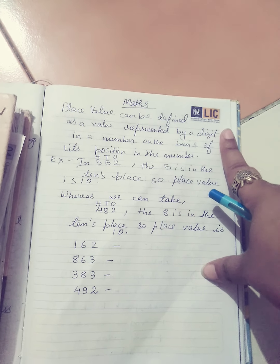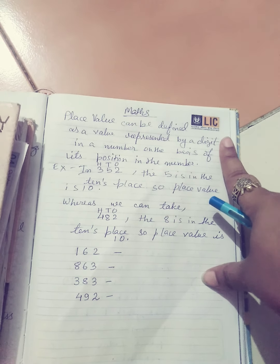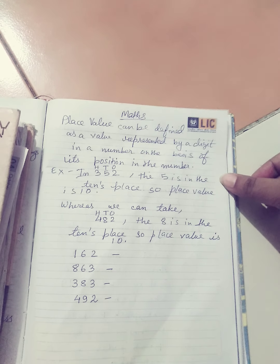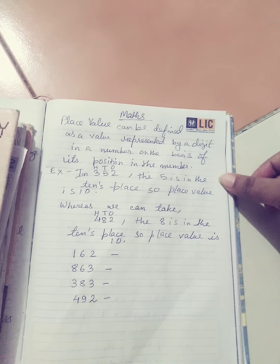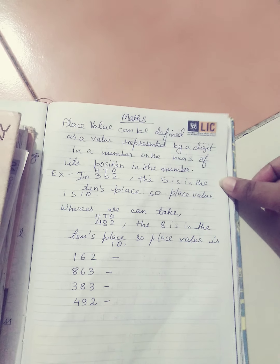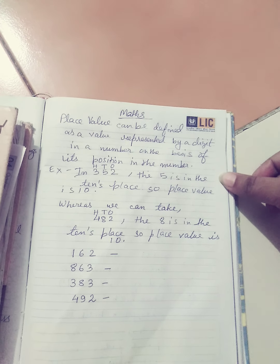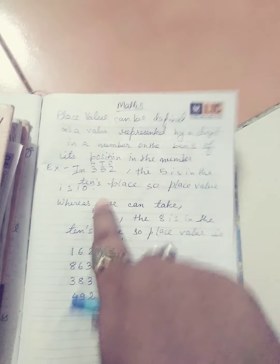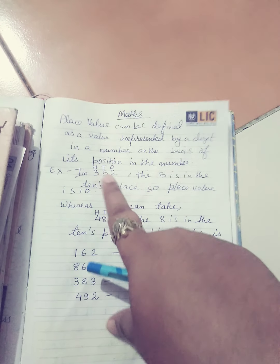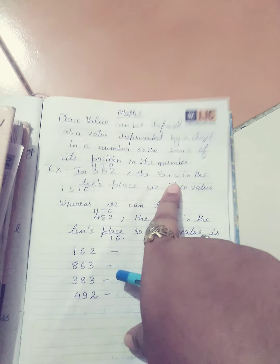First of all, we will know what is place value. Place value can be defined as a value represented by a digit in a number, based on its position in the number. For example, I have shown here: in 352, we have hundreds, tens, and ones.